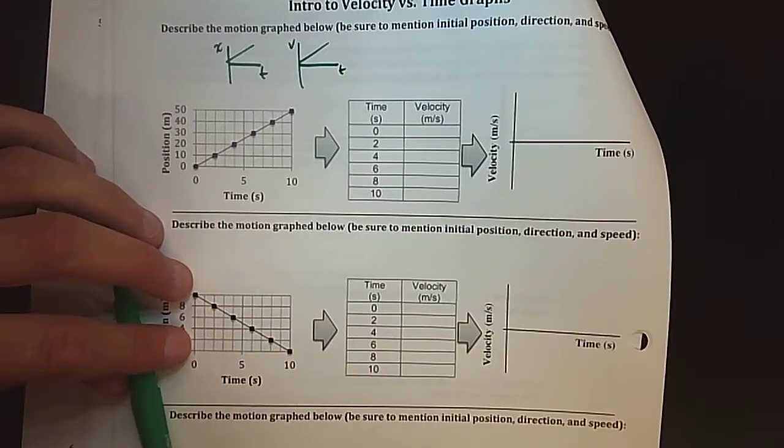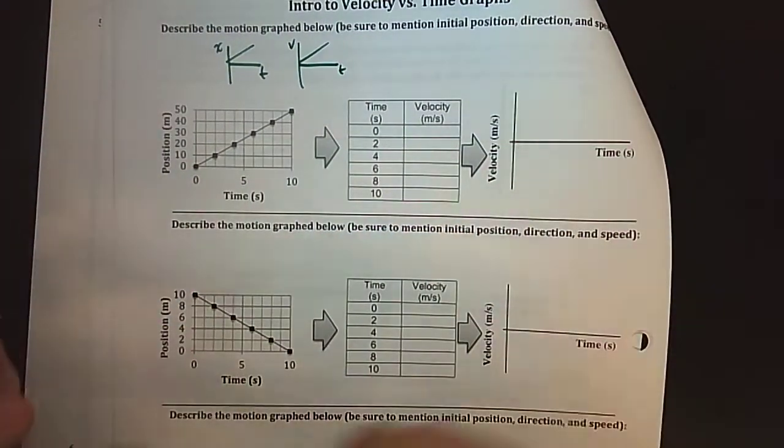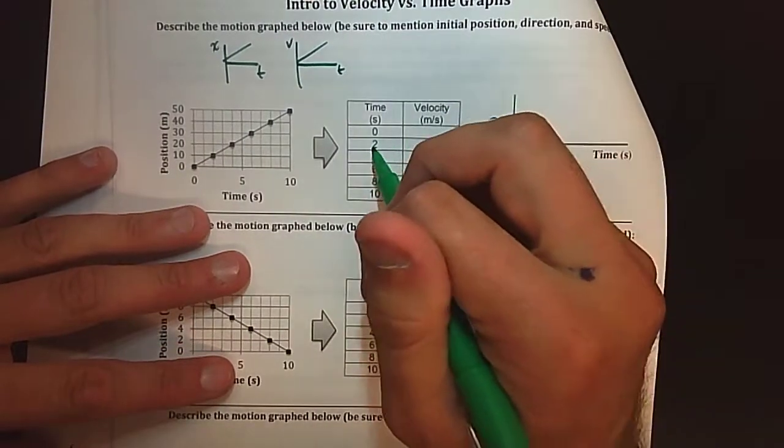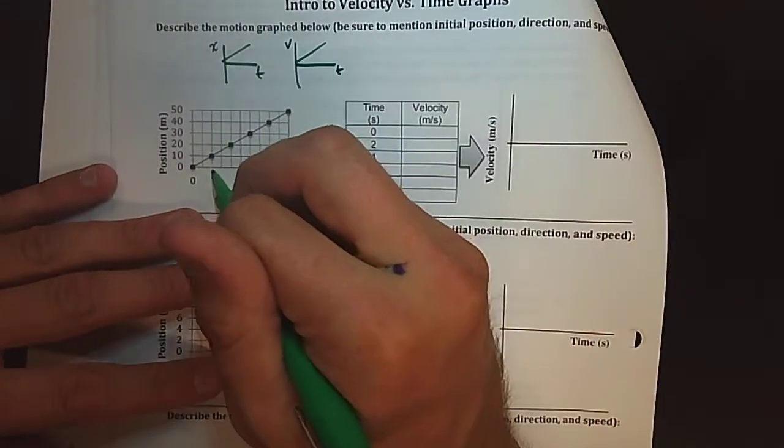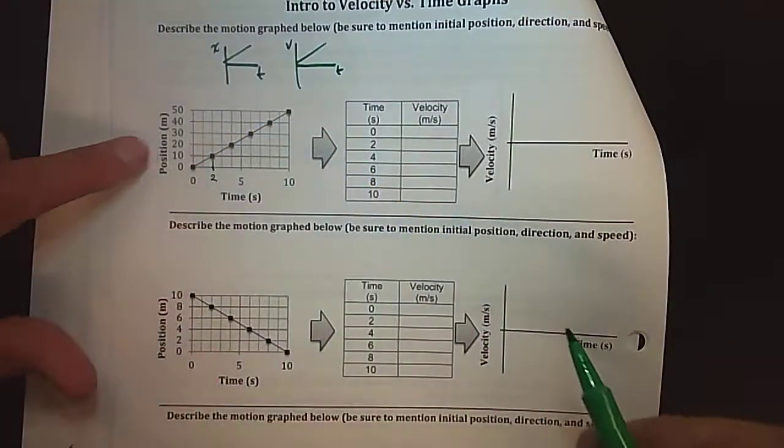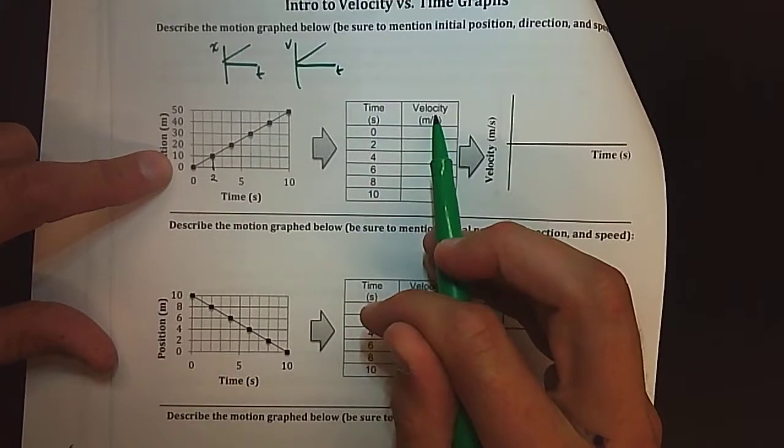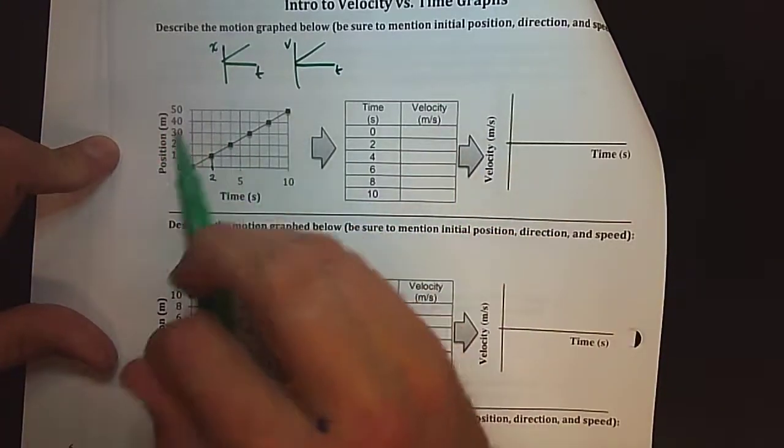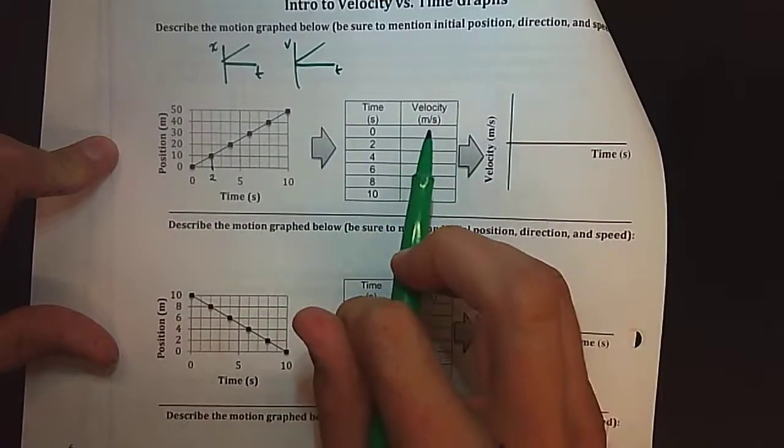I'm actually going to start at time two here. If I go up and over my position is ten, but I'm not looking for my position, I'm looking at my velocity. There's nothing that's clearly labeled velocity here, however velocity's units are meters per second.